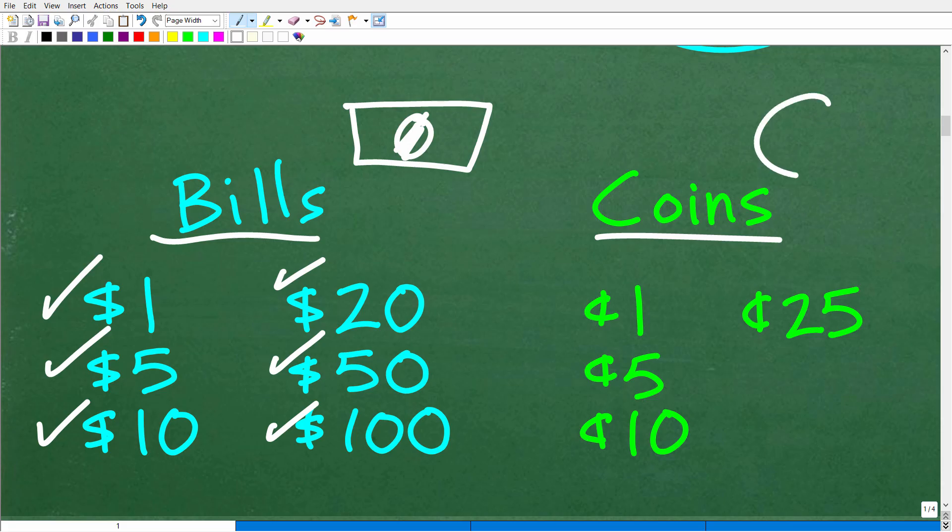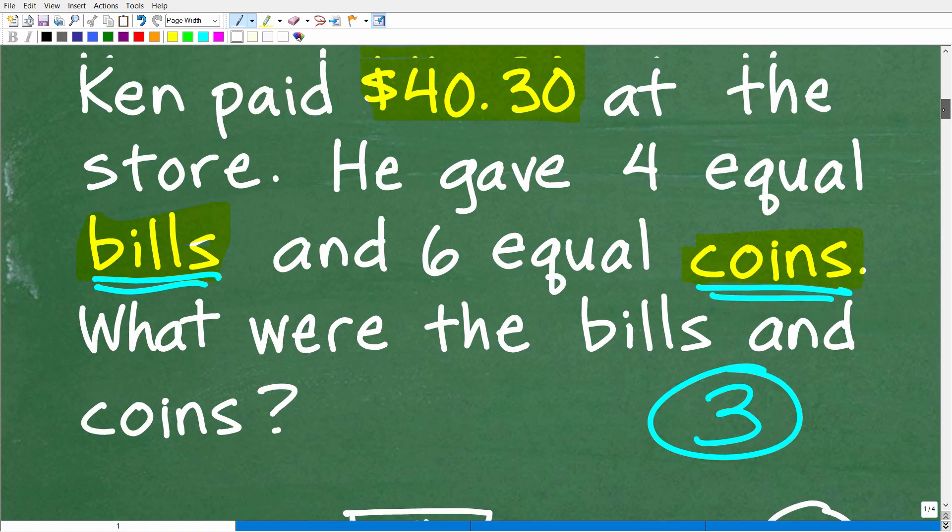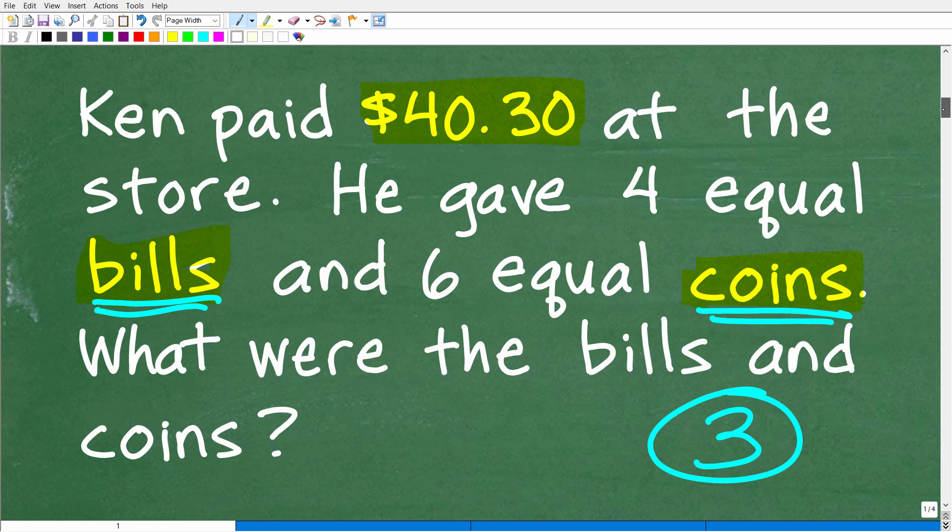How about coins? Well, a coin is a round thing with silver or whatever the case is, nickel. Coins in the United States can be one cent, which of course would be a penny. And then we have five cents, which is a nickel. Then we have a dime, which is 10 cents. And then 25 cents is a quarter. So these are pretty much the options that we have or Ken has to pay this $40 and 30 cents.